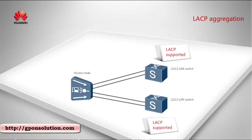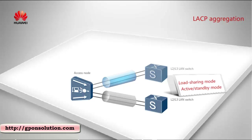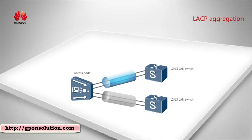If the upper layer device supports LACP and the links are required to work in load sharing or active standby mode, LACP aggregation is recommended. In LACP aggregation, the load sharing mode applies when the access device is single homed to an upper layer device, while the active standby mode applies when the access device is dual homed to two upper layer devices. In the dual homing scenario, uplinks are protected at equipment level at the convergence layer, so dual homing provides better protection than single homing.